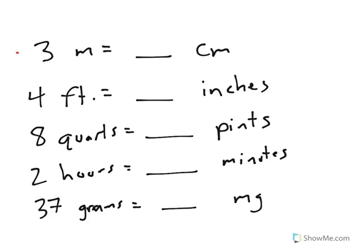The first one we're going to look at is 3 meters and how many centimeters it is. Well, I know that in 1 meter there are 100 centimeters. So now if I have 3 meters, that would mean 3 times 100 or 300 centimeters.